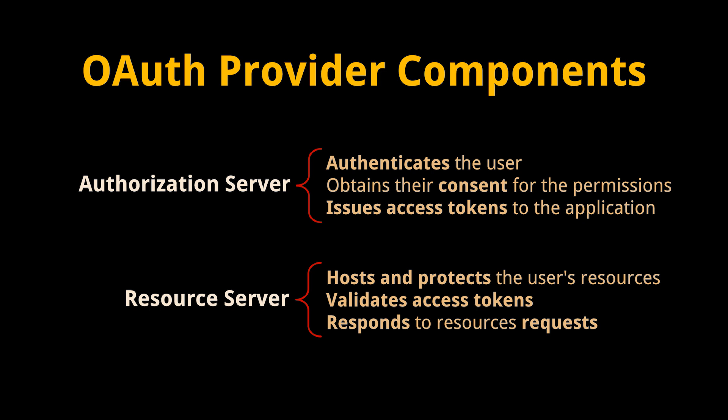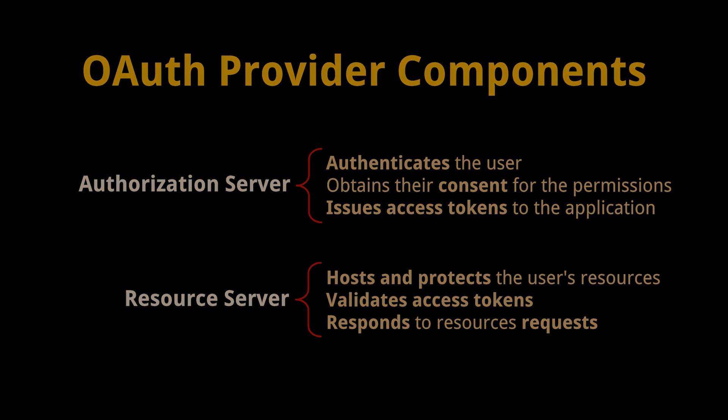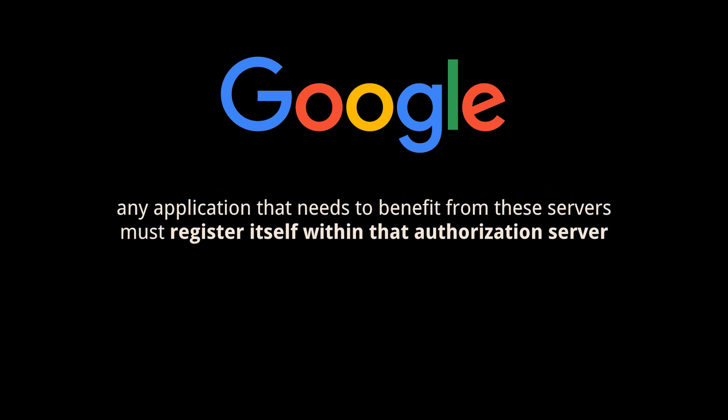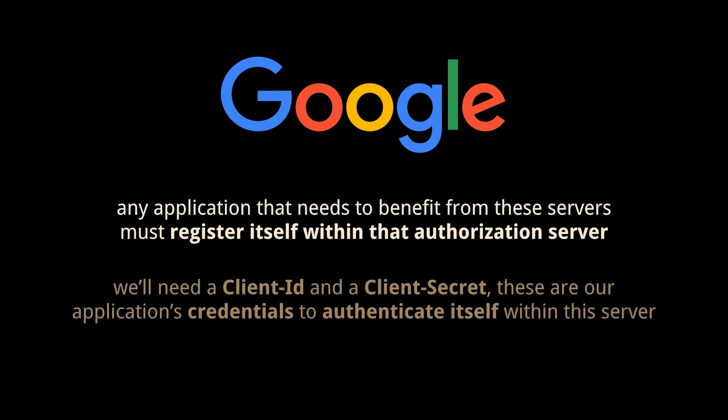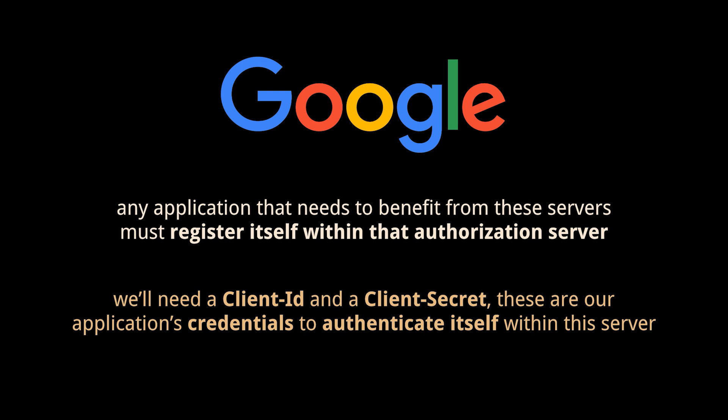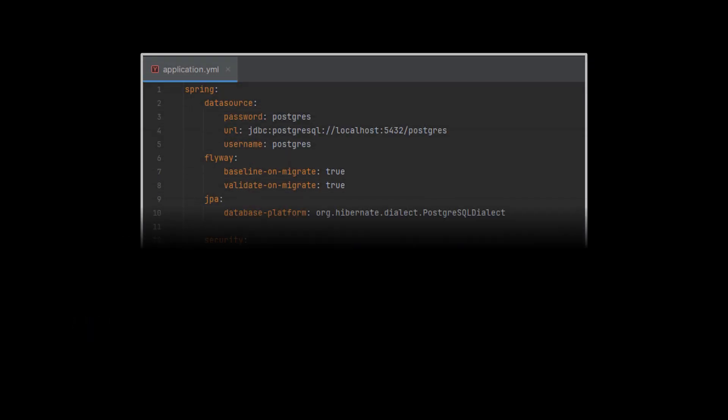In our example, we will make use of Google's authorization server rather than reinventing the wheel. Any application that needs to benefit from these servers must register itself within that authorization server. To do that, we'll need a client ID and a client secret — these are our application's credentials to authenticate itself within the server and allow us to benefit from the service it provides.